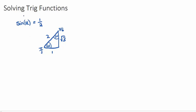Sine is opposite over hypotenuse. So what we want to do is think about sine of what angle — looking at the angles in our triangle — sine of what angle is going to be 1 over 2. This is the challenging step; we need to decide which angle it's going to be. Hopefully you saw that pi on 6 would be our angle, because the opposite to pi on 6 is 1, and the hypotenuse is 2, and sine is opposite over hypotenuse.